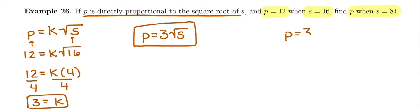So P is going to be 3 times the square root of 81, plugging in that S value. What's the square root of 81? It's 9. Or you can plug right into your calculator. 3 square root of 81 is 3 times 9. You get P is 27.